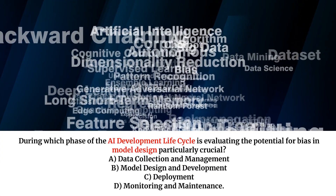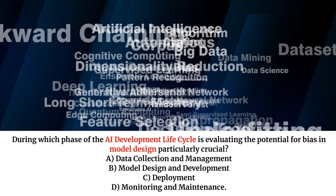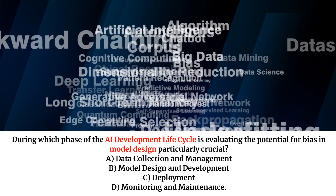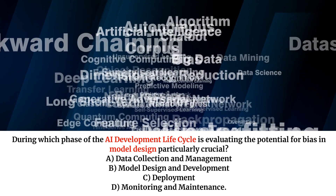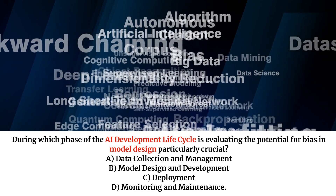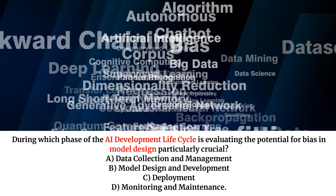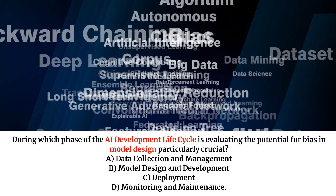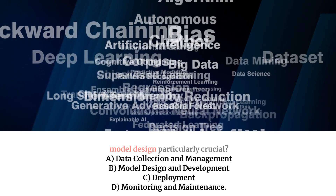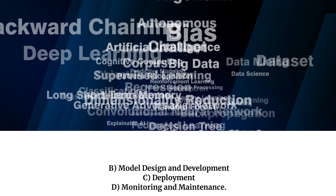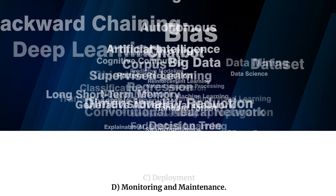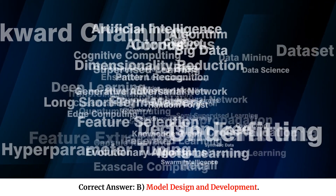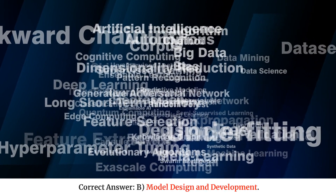During which phase of the AI development lifecycle is evaluating the potential for bias in model design particularly crucial? A. Data collection and management. B. Model design and development. C. Deployment. D. Monitoring and maintenance. Correct answer: B. Model design and development.